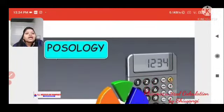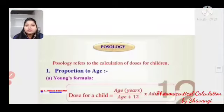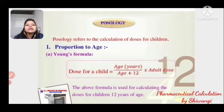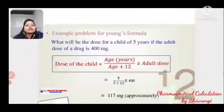Posology is a branch of medicinal science that deals with drug dose calculation. Young's formula is used for children up to 12 years of age: Dose = Age / (Age + 12) × Adult dose.